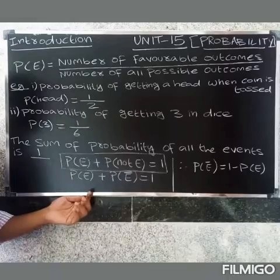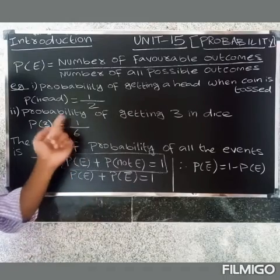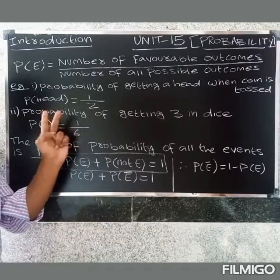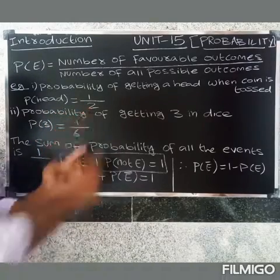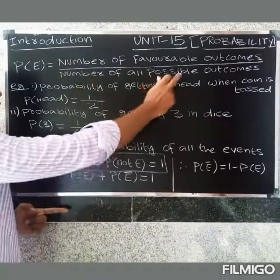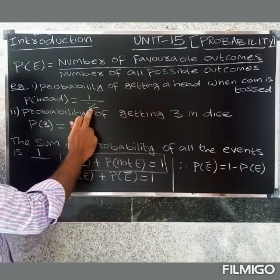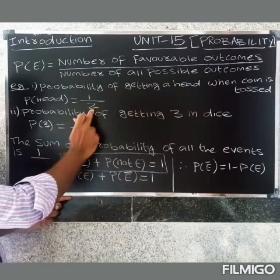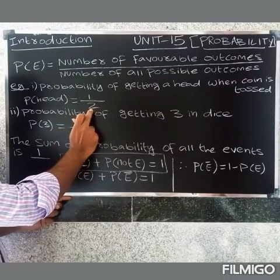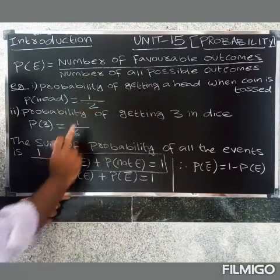Probability of getting a head when a coin is tossed. When one coin is tossed, there is one head option and one tail option, so the number of all possible outcomes is two.